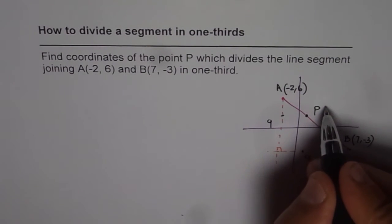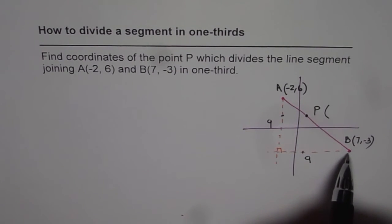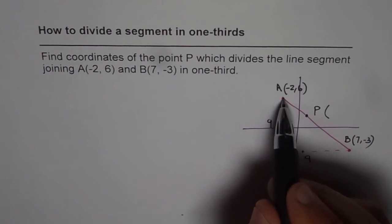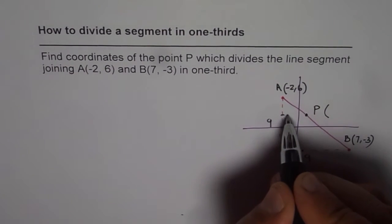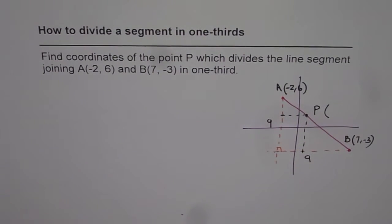So this point P should have X coordinates which is from here, one-third from A. Do you see that? And the Y coordinates, which is also one-third from A. So that is how you can get the point P. That is the basic concept of answering this question.